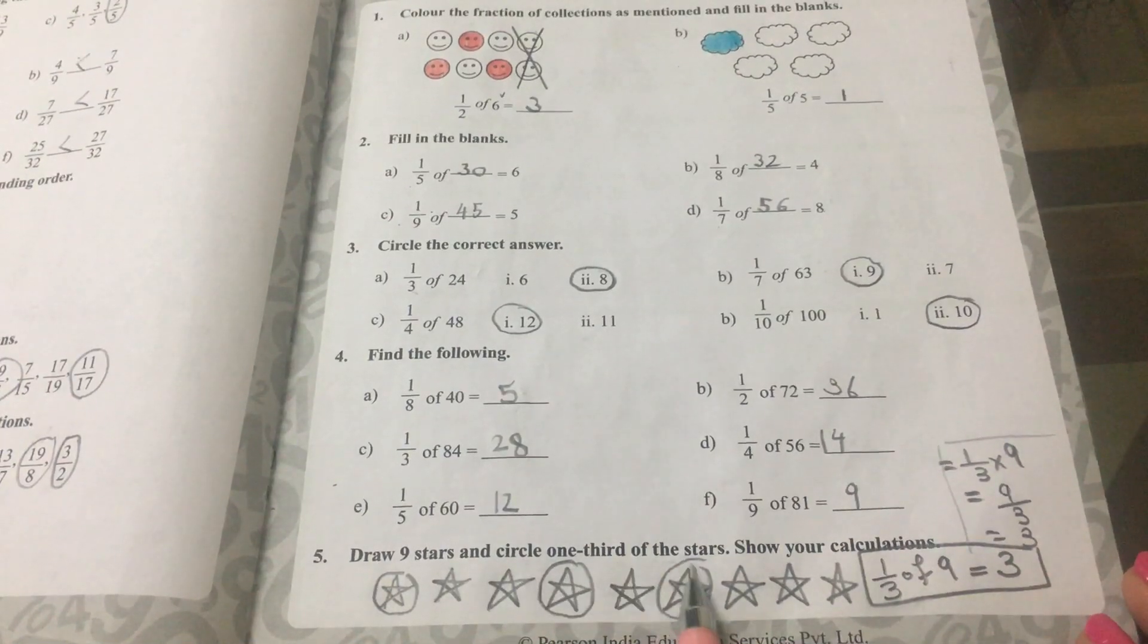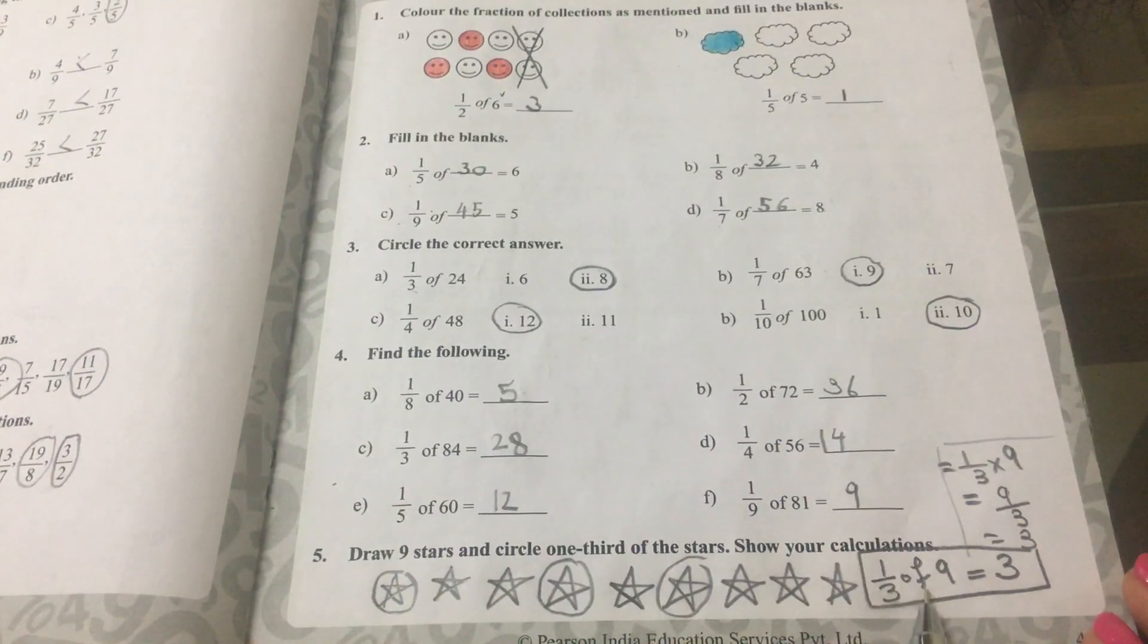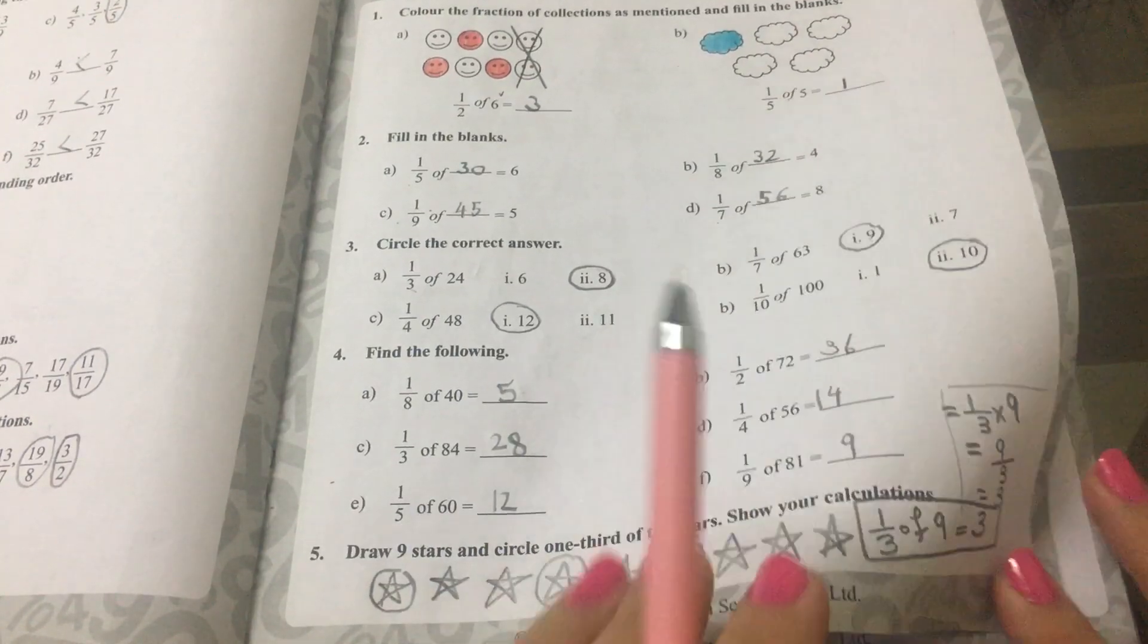Draw 9 stars and circle 1 third of the stars. Show your calculations. So, 1 third of 9 is equal to 3, and then you should circle 3 of the stars.